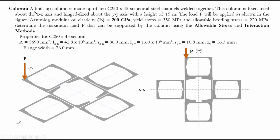Let's read the question. A built-up column is made up of 10 C250x45 structural steel channels welded together. C250x45 means the depth of our channel section is 215 mm, and the dead weight of our steel channel is 45 kN per meter. We're not going to use this value in this question, but this is the most important part.